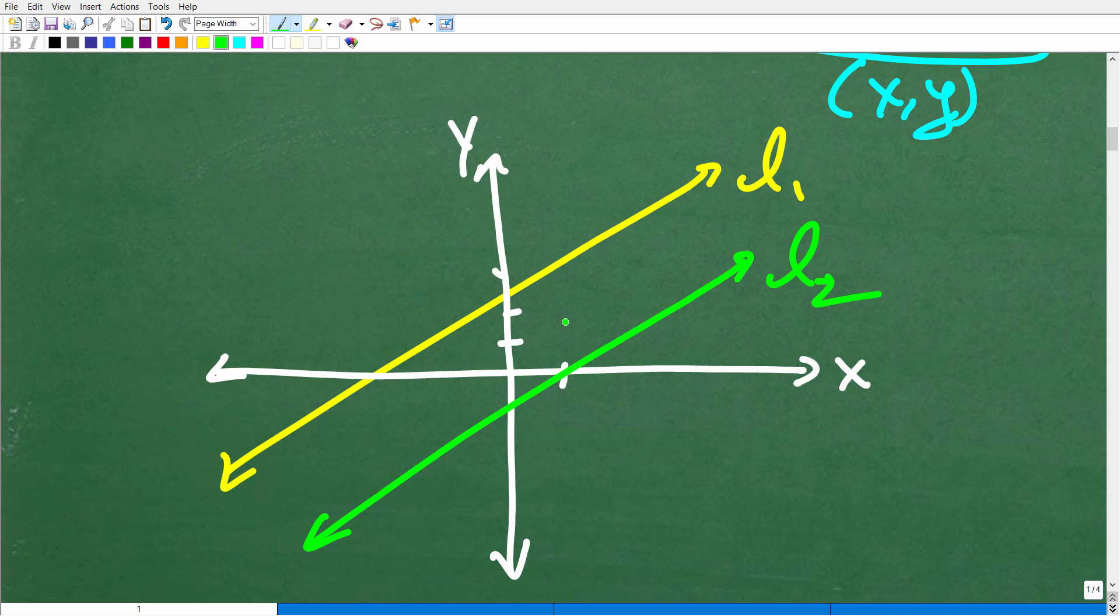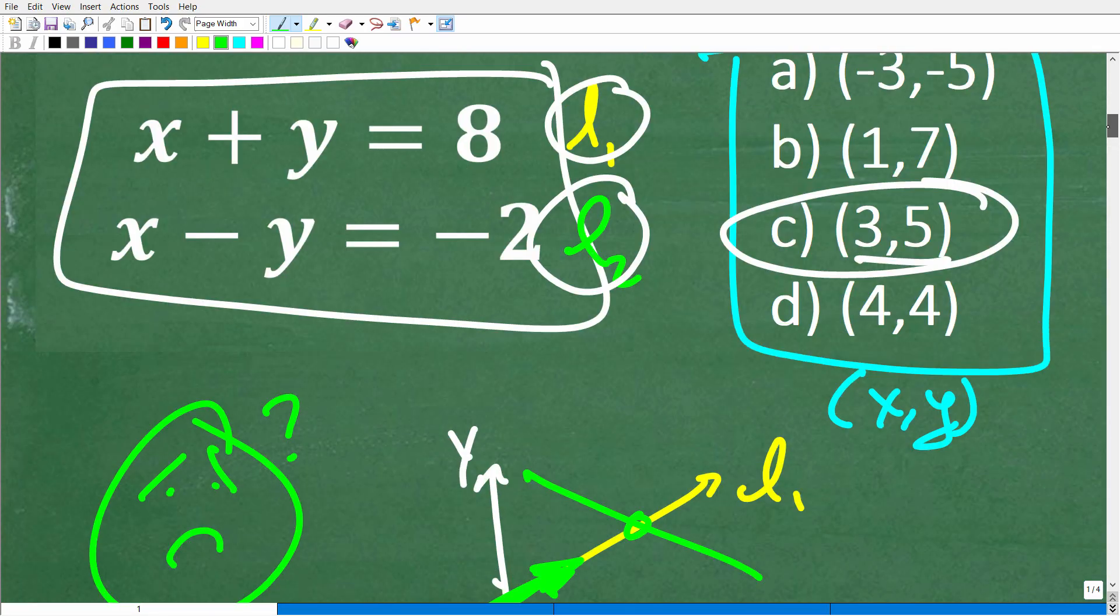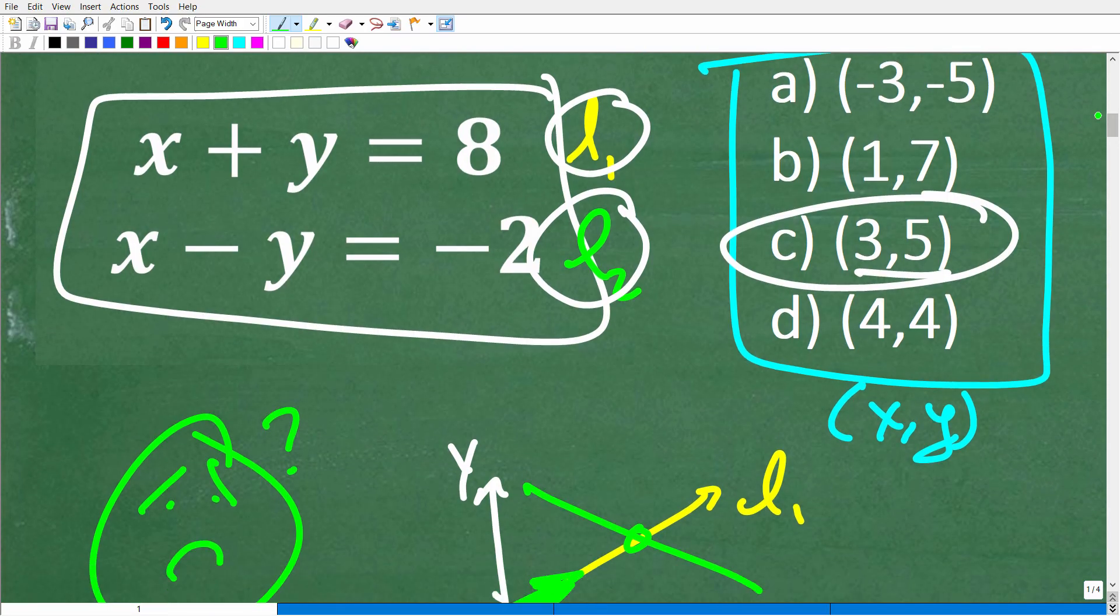Now, these two lines here are parallel. So what do you think the solution is? You might be saying, they're not crossing. Maybe there is no solution. Well, you would be correct. So here, this system has no solution. You're not guaranteed to have a solution when it comes to a system. You have to work the problem out. So you can have a scenario where you have a solution, you can have a scenario where there is no solution, and then you can have another scenario where you have infinitely many solutions, where you have one line on top of another line. These are really big and important topics in algebra.